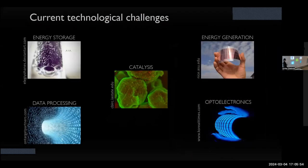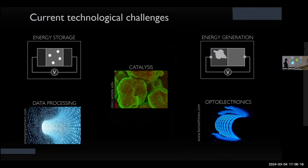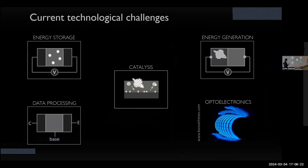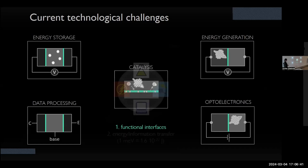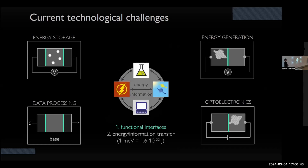Let me motivate the presentation with the motivation we use for our research. We are interested in current technological challenges: energy storage and generation, data processing, catalysis, and electronics. These five areas are very different, and they have functional elements — solar cells, batteries, LEDs, transistors, and so on. Although they look very different, they have three important aspects in common. In all these elements, it's the interface that governs the functionality, and across this interface we have either energy or information transfer. The fundamental elementary processes happening there occur on ultrafast timescales — electron transfer, charge transfer, energy transfer.